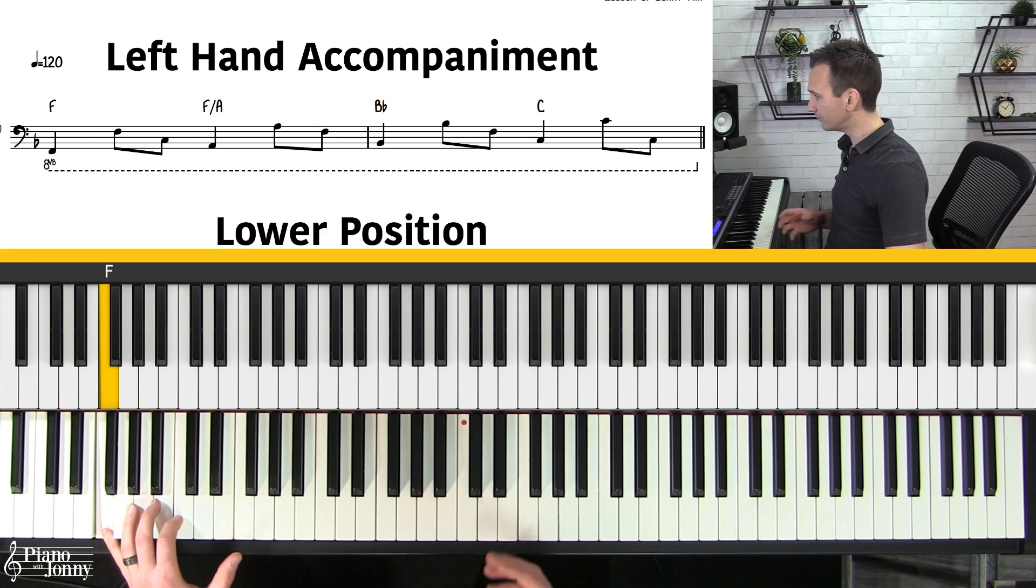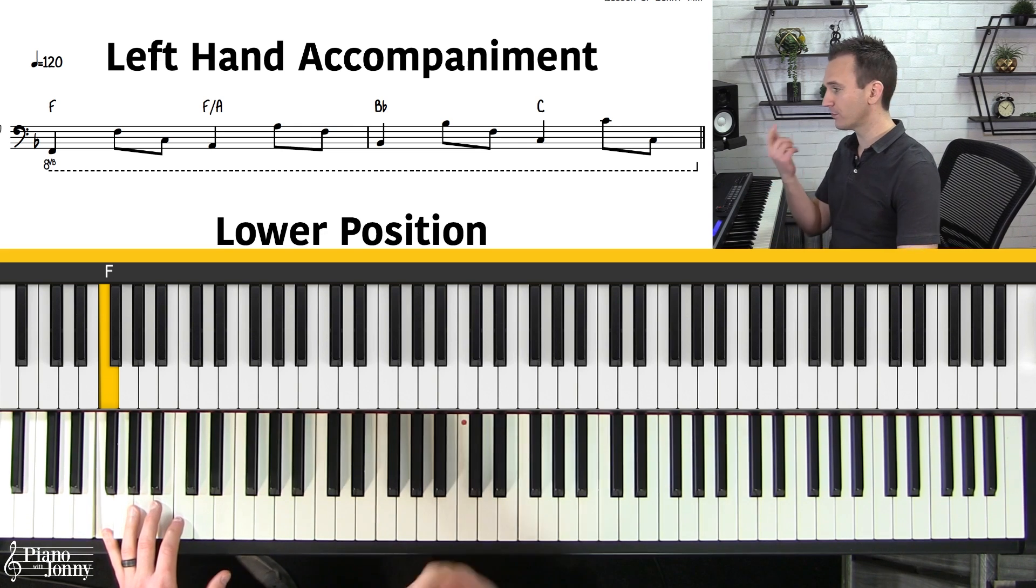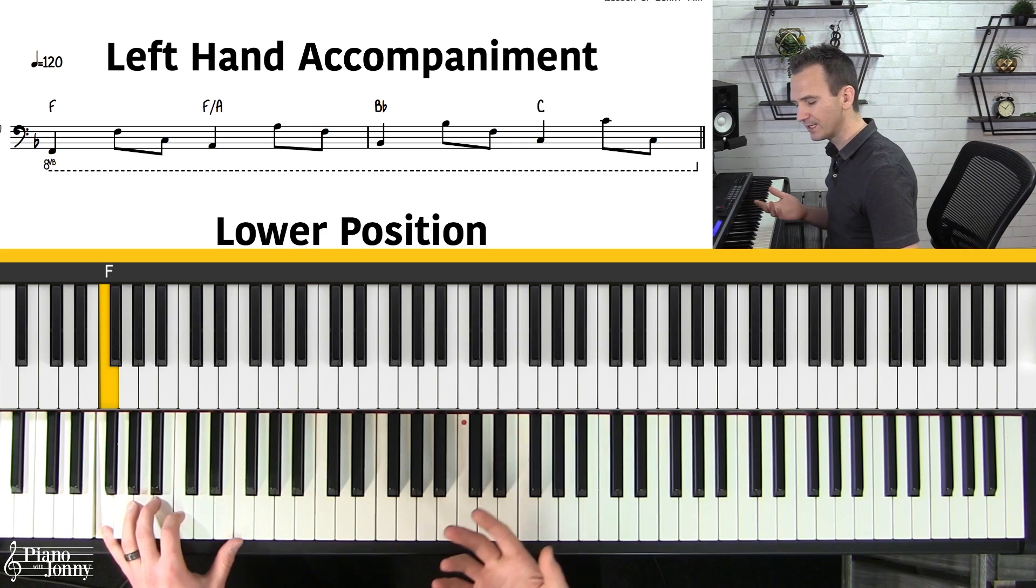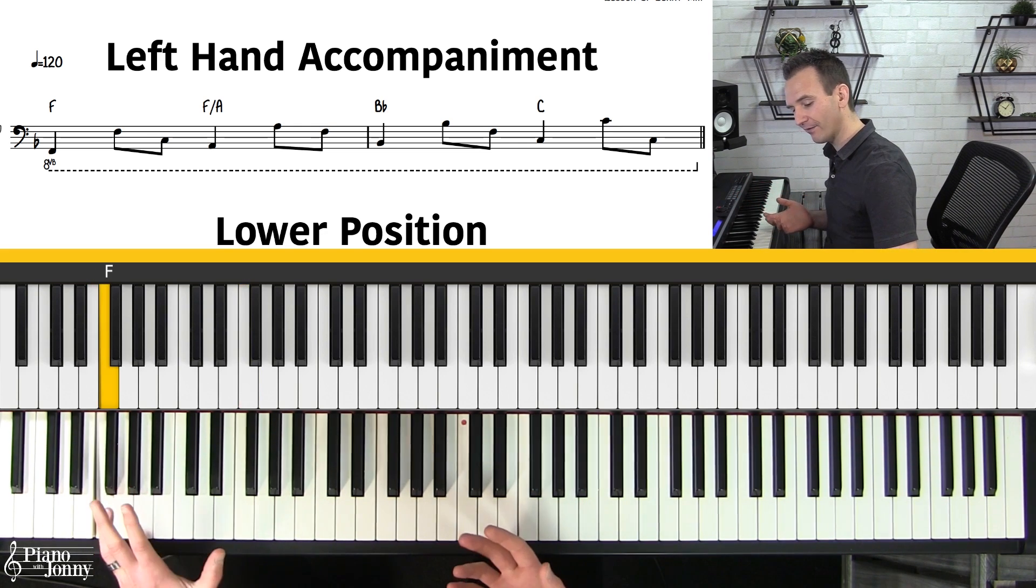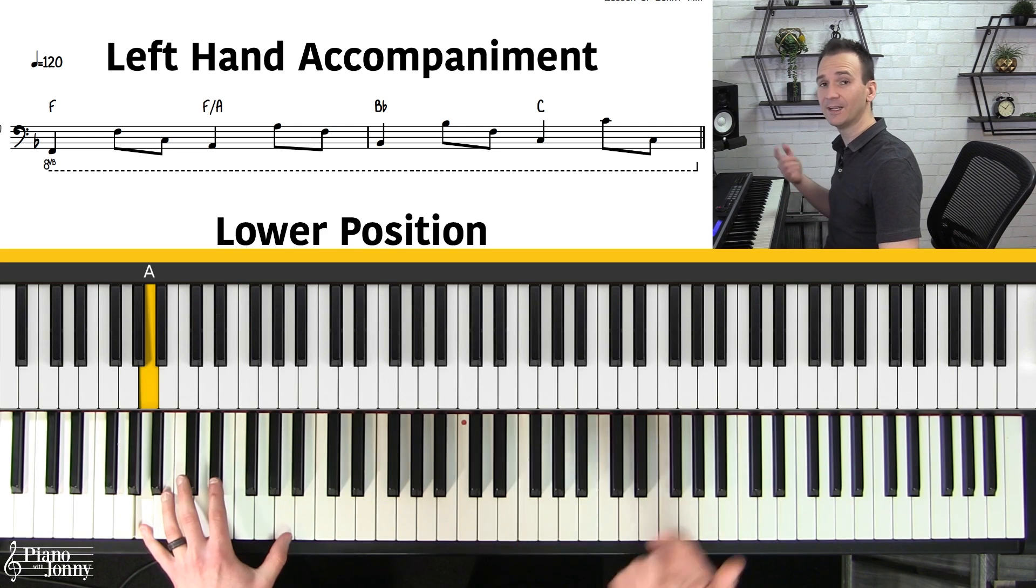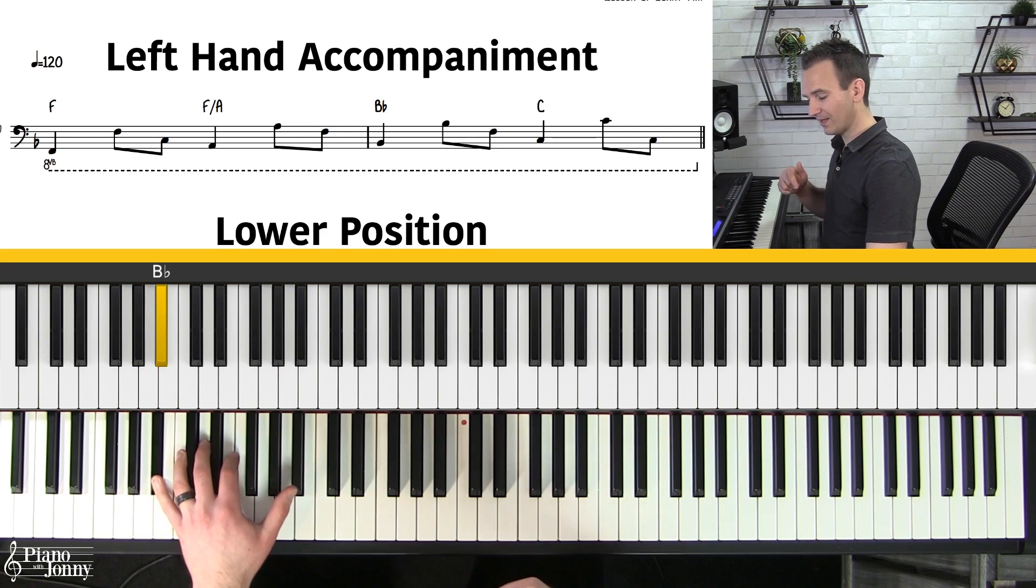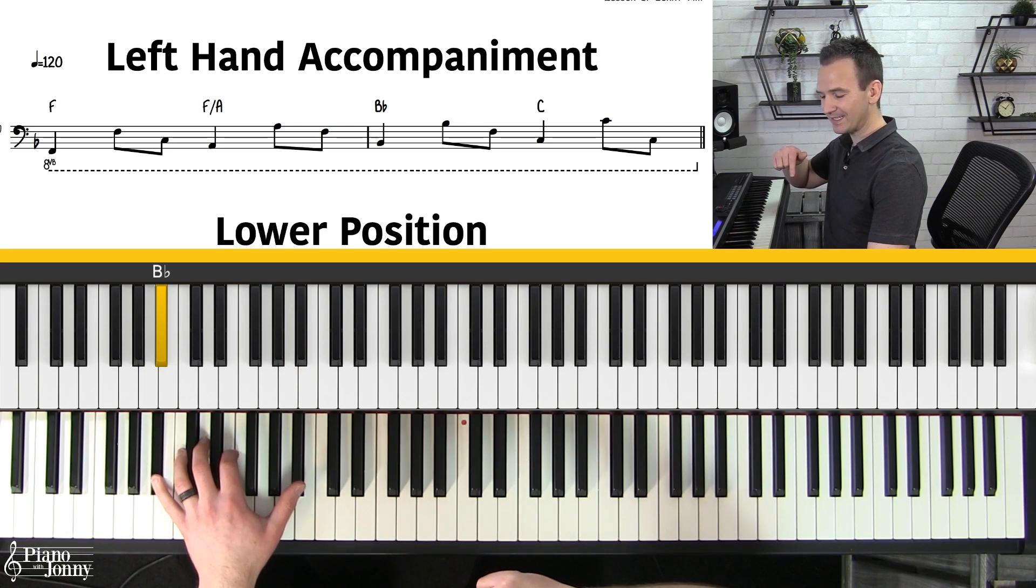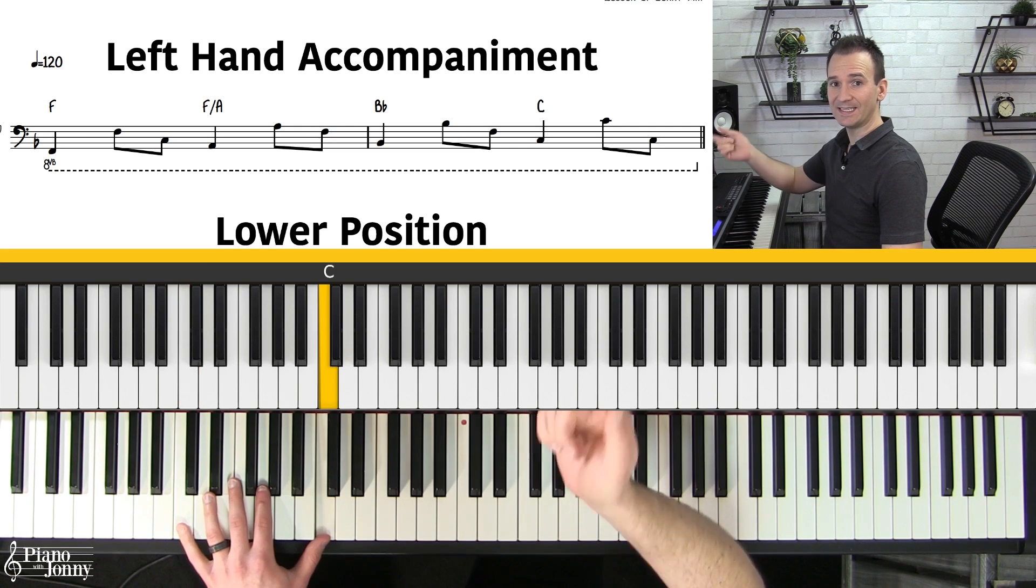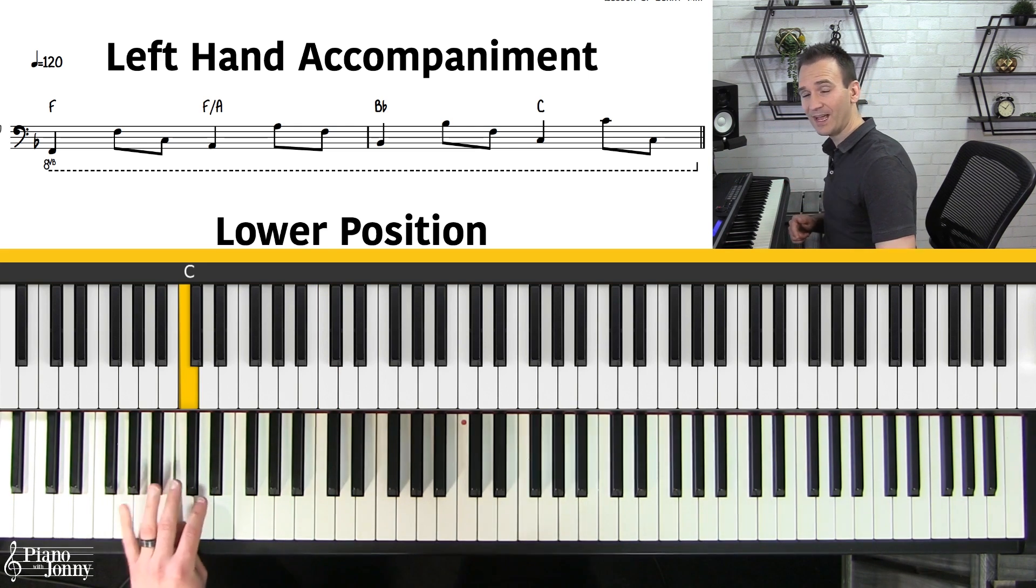Now you want to build some speed on this. There is an alternate way to play this if you're more of a beginner student. It's a little bit easier, but it's F, F, F, simple octaves, A, A, A, B flat, B flat, B flat, and then C, C, C, C, C.